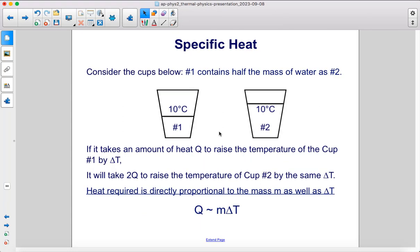Consider the cups below. Number 1 contains half the mass of water as cup number 2. If it takes an amount of heat Q to raise the temperature of cup number 1 by ΔT, it will take 2Q to raise the temperature of cup number 2 by the same amount. Heat required is directly proportional to the mass as well as the change in temperature.